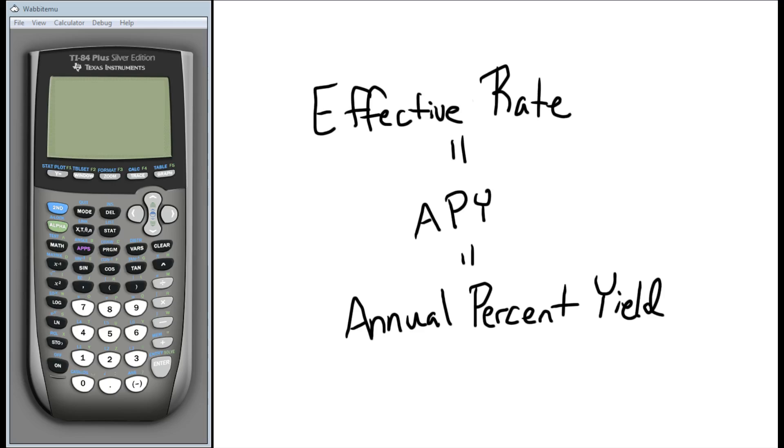And so because of that, we've come up with what we call the effective rate or annual percent yield, which says no matter how often we compound it, at the end of the year, how much by what percentage did that investment grow?